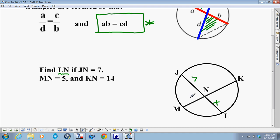MN is 5, so I'm going to put a 5 right here. And KN is 14—14 units, 14 centimeters, whatever. So basically, here's how this works.